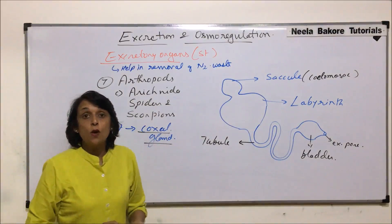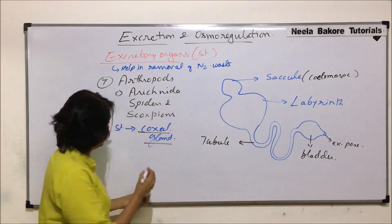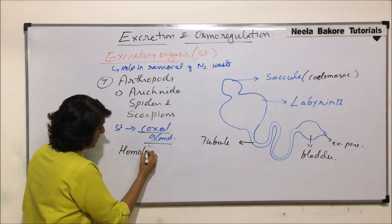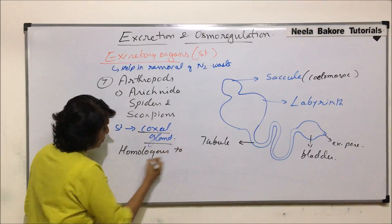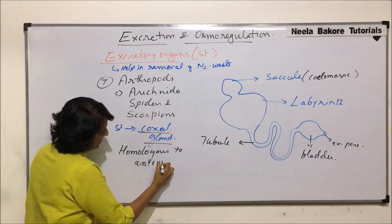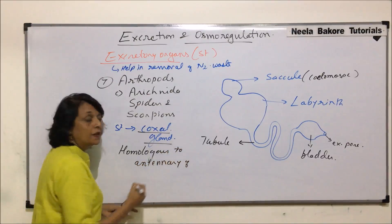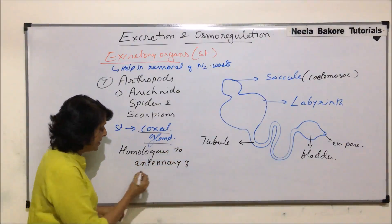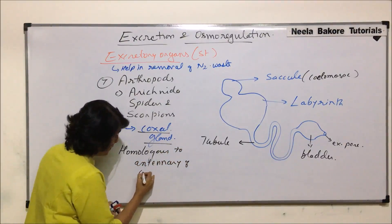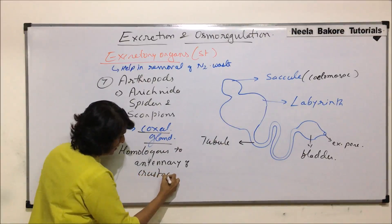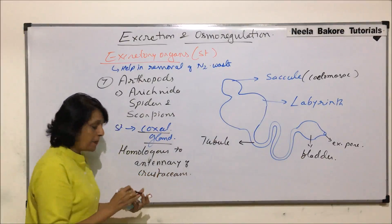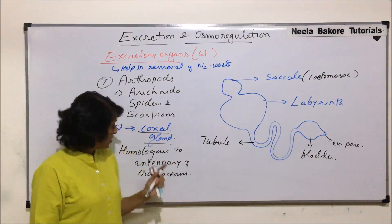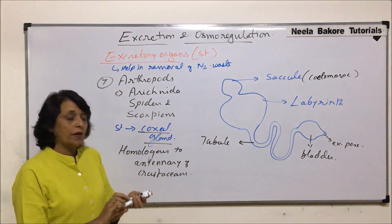Coxal glands are considered homologous to the antennal glands of crustaceans. That means they perform the same function and have evolved probably from the same ancestral structure — that is why they are termed homologous.